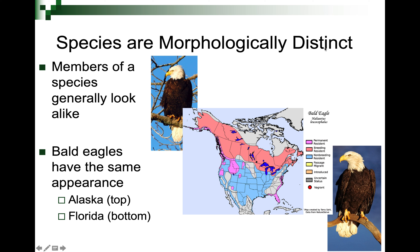Species are morphologically distinct — members of a species generally look alike. For example, bald eagles can be found from Alaska all the way down to Florida and parts of Mexico, and all bald eagles look essentially the same. You can actually start to see bald eagles now in the state of Utah if you get out into more rural areas, as Utah is a fantastic overwintering ground for large predatory birds.